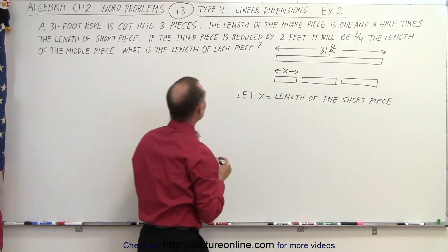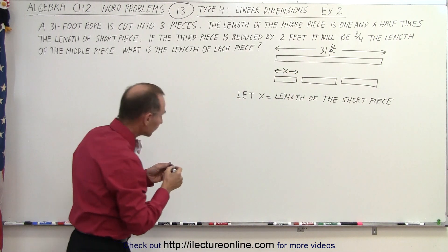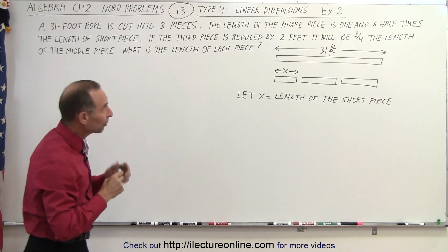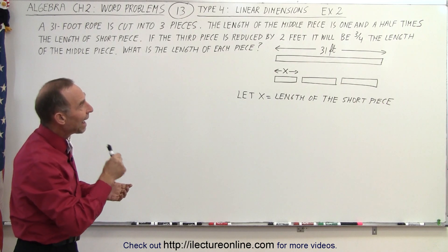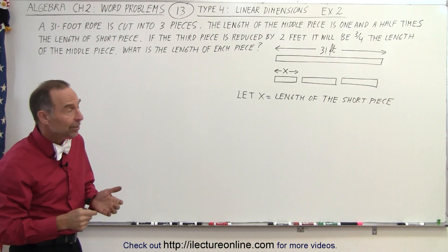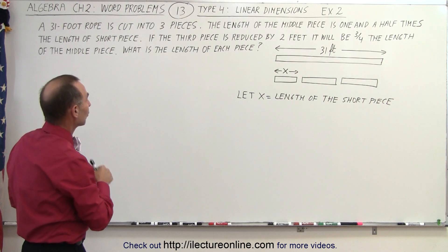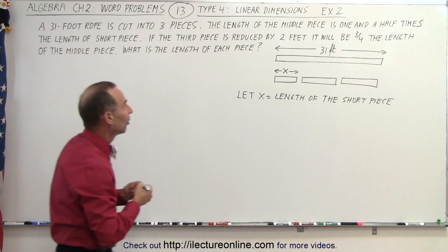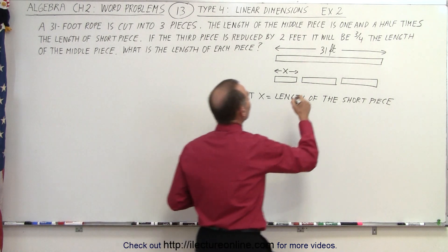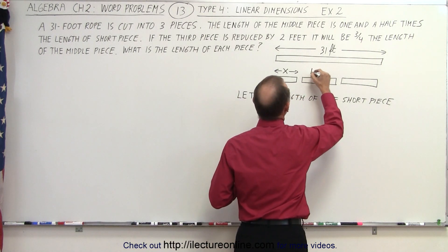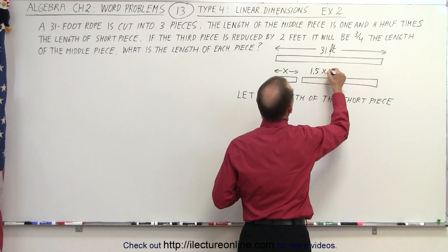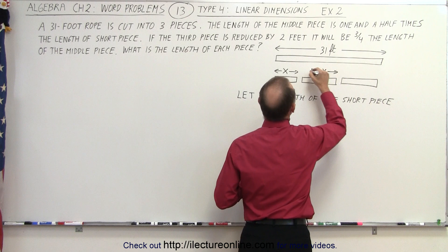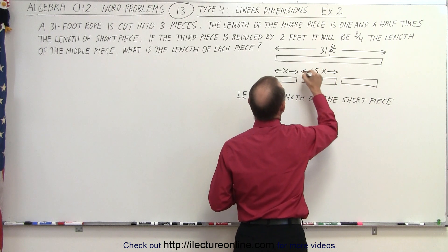So we can indicate that this piece has a length equal to X. Now we go to the second piece: the length of the middle piece is one and a half times the length of the short piece, so 1.5X would be the length of the middle piece.